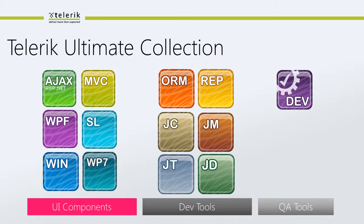The latest release of Telerik Reporting has a very compelling end-user report designer. We also have the Just products — JustCode, JustMock, and JustTrace — which I call the 360 of development: JustCode helps you be productive writing your code, JustMock helps you be productive testing your code, and JustTrace helps you optimize your code. And JustDecompile is a free .NET decompiler and assembly browser — free for everyone, free forever — an essential tool if you're doing any kind of .NET development.